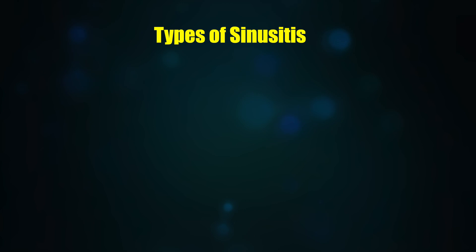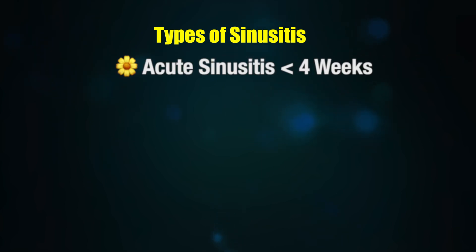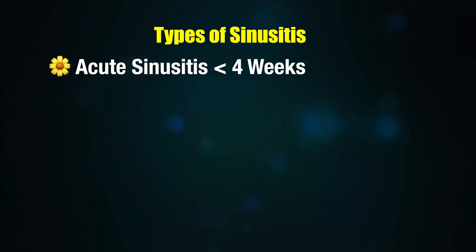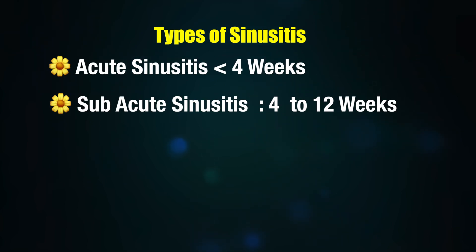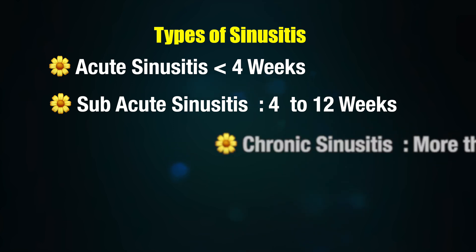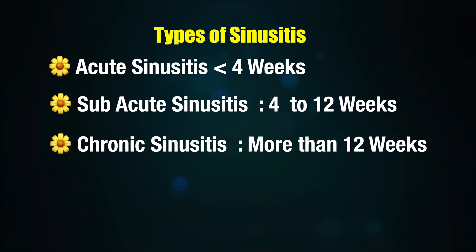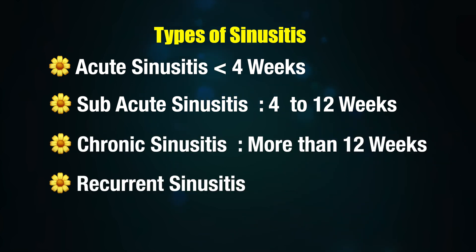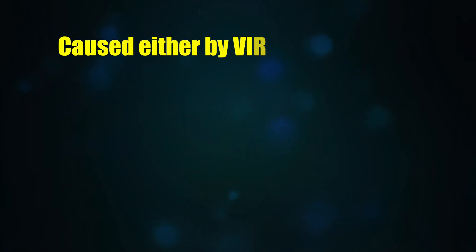Sinusitis could involve any of these sinuses. Depending on the duration of symptoms: acute sinusitis is less than four weeks, subacute sinusitis is four to twelve weeks, chronic sinusitis is more than twelve weeks, and there is also recurrent sinusitis.